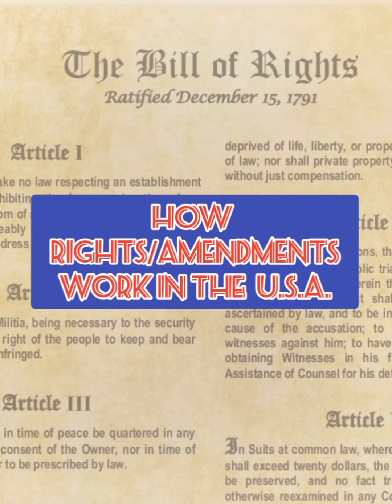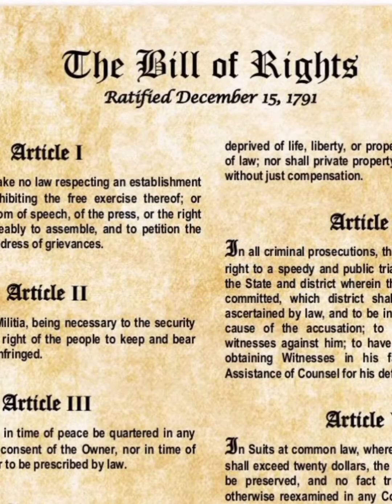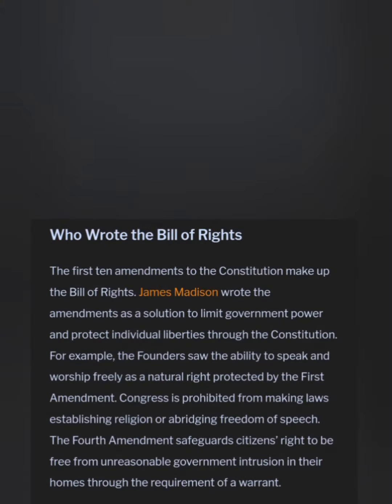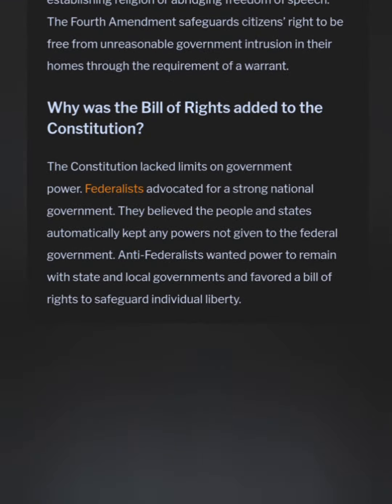How Rights and Amendments Work in the United States of America. First, we're going to talk about the Bill of Rights and the history behind it. The first ten amendments of the Constitution are called the Bill of Rights. It was written by James Madison as a solution to limit government power and protect individual liberties. It was pretty much added as a compromise for Federalists and Anti-Federalists, as the Constitution lacked limits on government power.